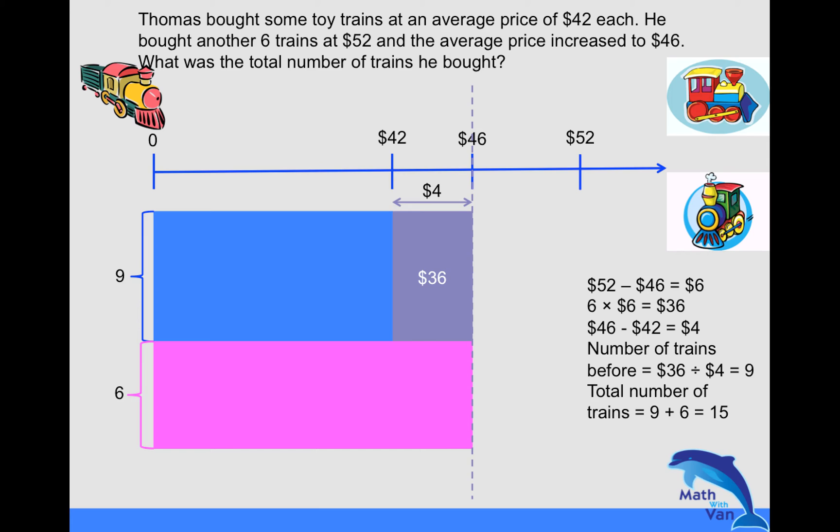Okay, so if this is a paper two question whereby you have the calculator, you may even use the calculator to help you check your work. Alright, then plug in the figures: nine times forty-two dollars plus six times fifty-two will be equal to fifteen times an average price of forty-six.